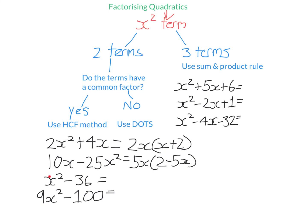Let's look at this one: X squared minus 36. It's a quadratic because it has an X squared term. It has two terms, but there's no common factor — X squared and negative 36 do not share a common factor. So we use difference of two squares. It's a perfect square minus a perfect square. You get two brackets, square root the first: square root of X squared is X. Square root the second: square root of 36 is 6. One bracket gets a plus, one gets a minus. It doesn't matter which. If I expand this using FOIL, I get the original expression.